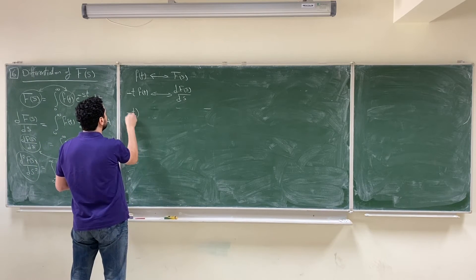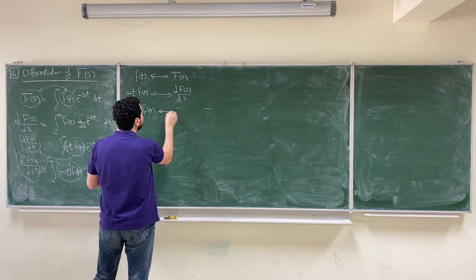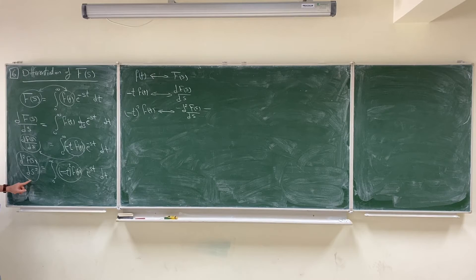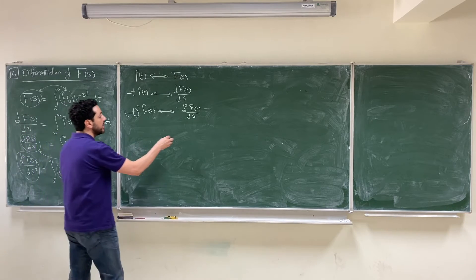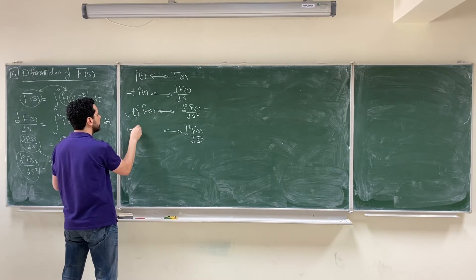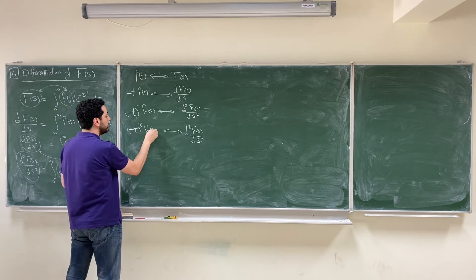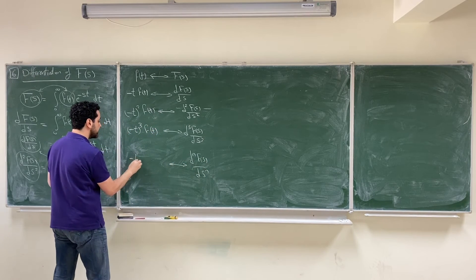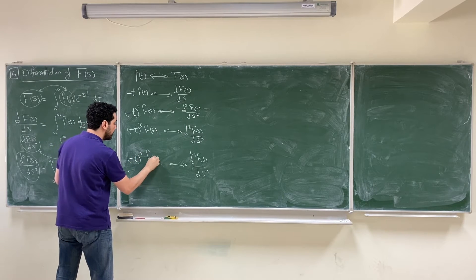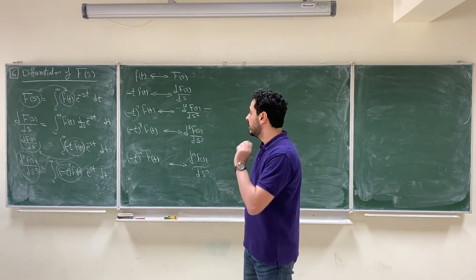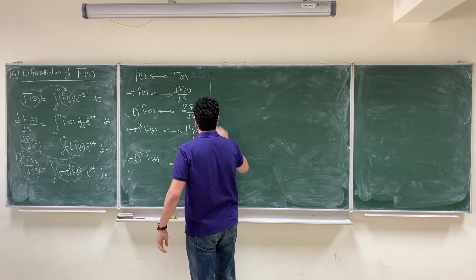So if you have -t²·f(t), its Laplace transform is d²F(s)/ds². Every time you differentiate in the s-domain, you multiply by -t in the time domain. If you keep differentiating, you get -t³·f(t), and in general, differentiating n times gives (-t)^n·f(t) in the time domain. Differentiating in the s-domain is equivalent to multiplying by -t in the time domain.